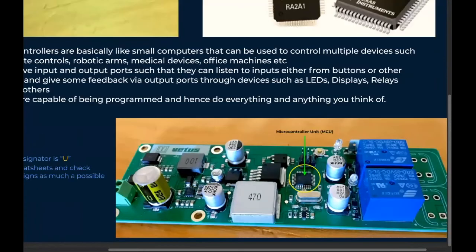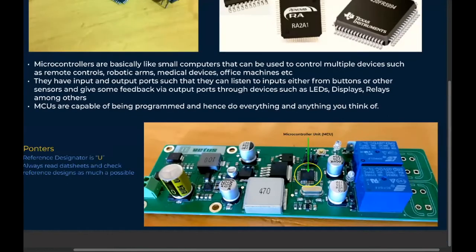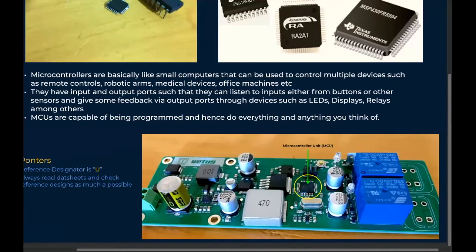On this same PCB I've been showing, there's an MCU here that acts as the brain — it controls the relays and LEDs, and takes inputs from this button. This PCB was specifically for automotive power regulation. The MCU monitors voltage levels: if we're at a certain level it switches a relay on or off; if not, it amplifies or downgrades the voltage accordingly.